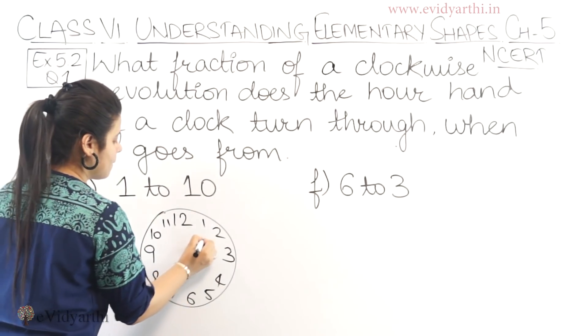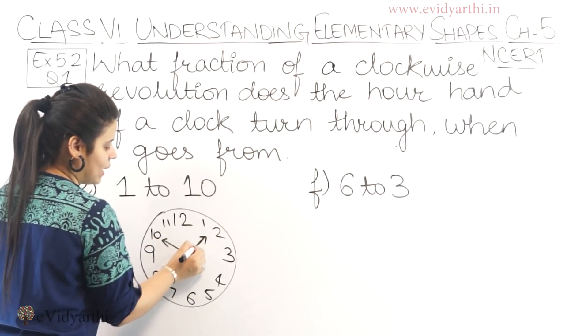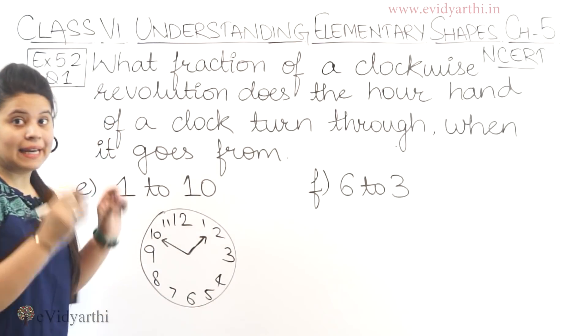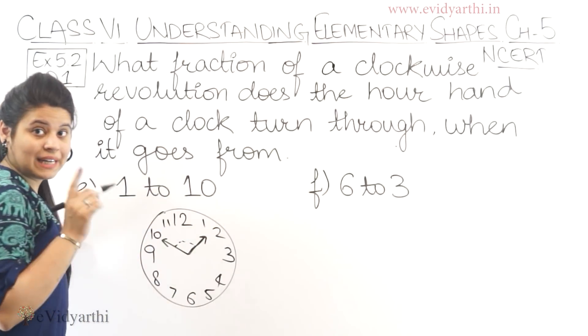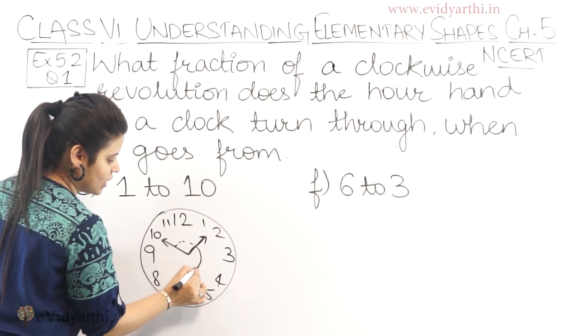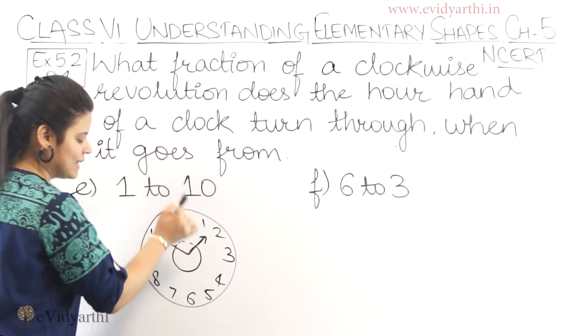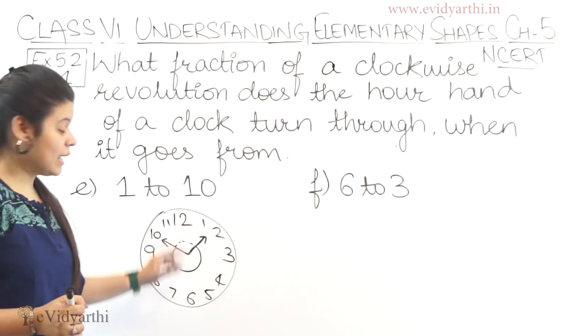Now, from one. One se ten tak. This is one. This is ten. Again, ten se one nahi hai. Ten se one would be this angle. But it's one to ten. Matlab one se two, three, four, five, six, seven, eight, nine, ten. Matlab this big angle we're talking about. Okay?